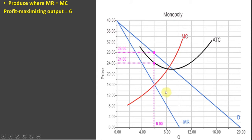The Monopoly will produce where marginal cost equals marginal revenue. So we find that intersection here, where MC equals MR. We come down to the quantity axis, and that's 6. 6 represents the profit-maximizing output.